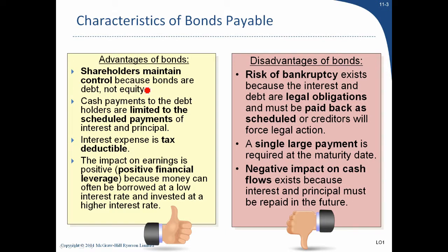It's still debt financing, but instead of being a one-to-one relationship it's a one-to-many relationship. The company might issue a million dollars worth of bonds and we could all go out and buy them — usually issued in thousand-dollar increments. Because bonds are debt, some advantages: shareholders maintain control, the cash payments to debt holders are scheduled interest and principal, interest is tax deductible, and we pay less tax.